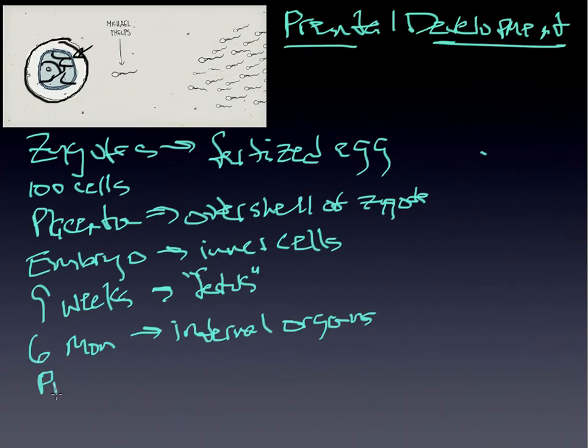At each prenatal stage of development, one of the things to keep in mind and underscore here is that there are factors. Each stage is affected by factors that we refer to as teratogens. And this can be in the form of substances that attack the developing fetus. A good example of teratogen would be alcohol.